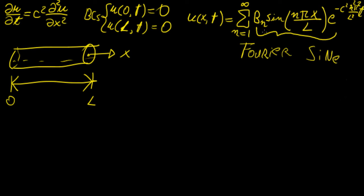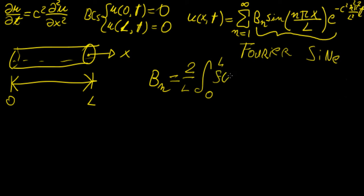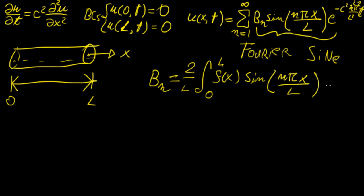That means we can represent bn by the following function, because we're taking half a range — we're taking zero to l, which is non-symmetric. So we're going to have 2 over l, from zero to l, of f(x) times sine of nπx over l, dx.